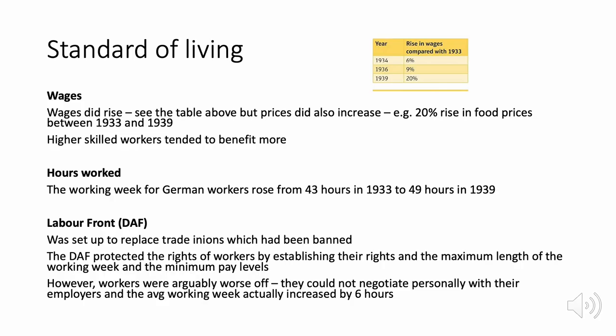Regarding standard of living: wages rose, but food prices also increased. Between 1934 and 1939 wages rose by 20%, but the lowest earners didn't benefit much from this, whereas higher-skilled workers saw bigger increases. The average working hours also rose. The Labour Front (DAF) was set up to replace banned trade unions, establishing workers' rights, maximum working week lengths, and minimum pay levels — though some argued workers were worse off since they could no longer negotiate directly with employers.